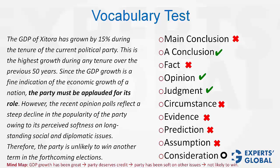There are three strong choices: a conclusion, opinion, and judgment. Out of these, 'a conclusion suggesting an intermediate conclusion' is the best by a distance, because this choice best summarizes the role of the bold face. The construction is that something positive was said, an intermediate conclusion was reached, and later something negative was said. The main conclusion of the argument is a negative outcome for the party. A conclusion is the best of these.